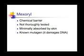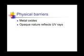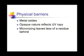Physical barriers to UVA rays are metal oxides, like zinc oxide and titanium dioxide. These used to leave a thick white film on top of your skin, as it is their opaque nature that allows UV rays to be reflected. More sophisticated technology has allowed for metal oxides to be micronized, which allows these products to leave less of a residue than they used to.